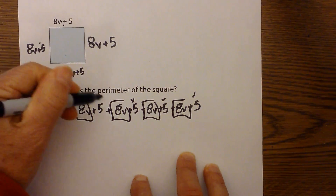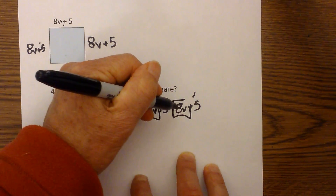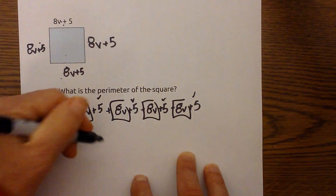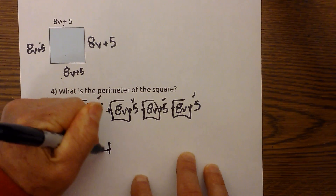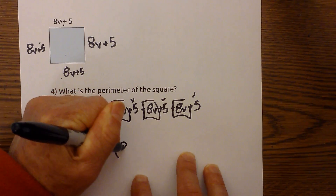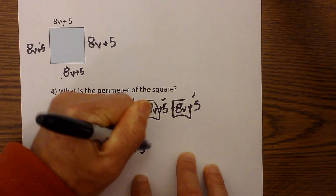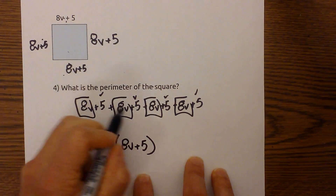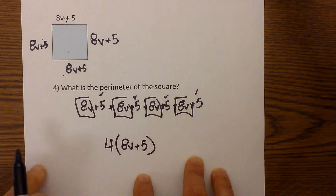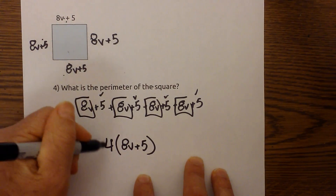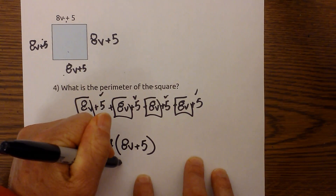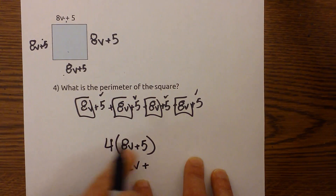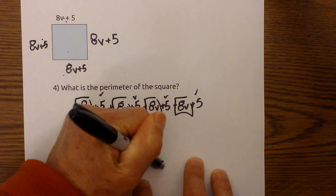So we have 8v plus 8v plus 8v plus 8v. Instead of adding those individually, I can write it as a formula — put it in parentheses. So I now have 4 times 8v, which is 32v, plus 4 times 5, which is 20. So the perimeter of the square is 32v plus 20.